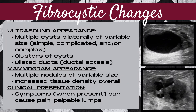The ultrasound appearance of fibrocystic changes has a wide variability, but generally you're going to see multiple cysts bilaterally of variable size. These cysts can be simple, complicated, or complex, or any mixture of those three. You may also see clusters of cysts and dilated ducts, which is known as ductal ectasia.